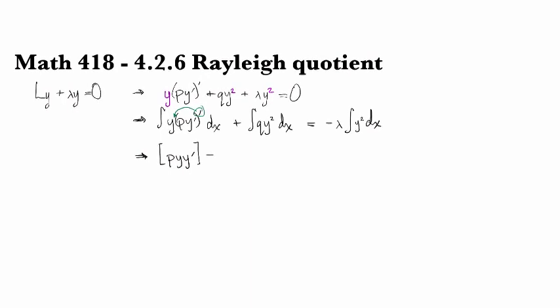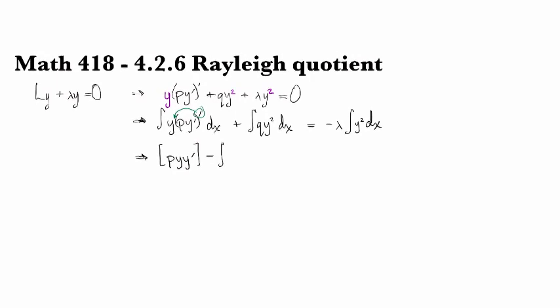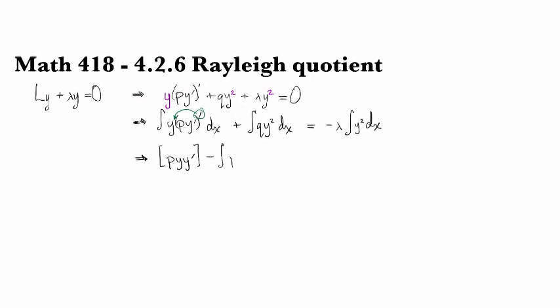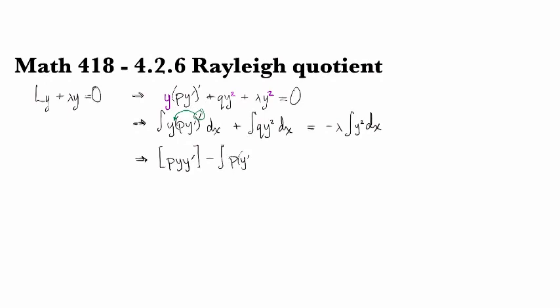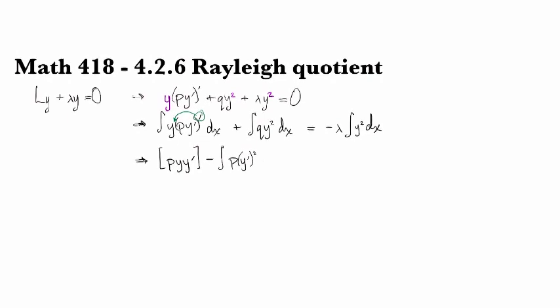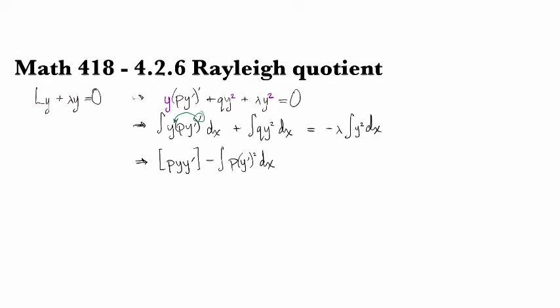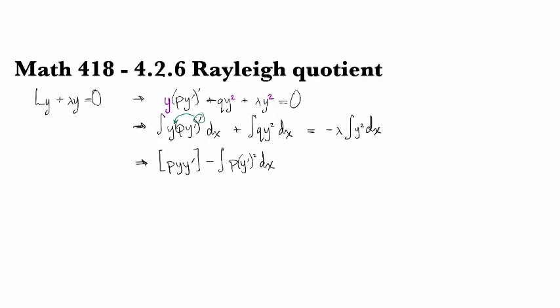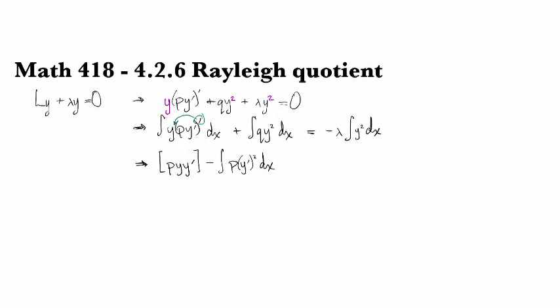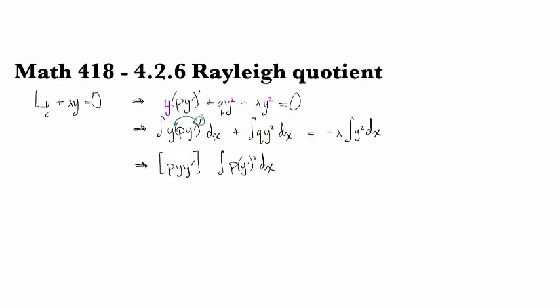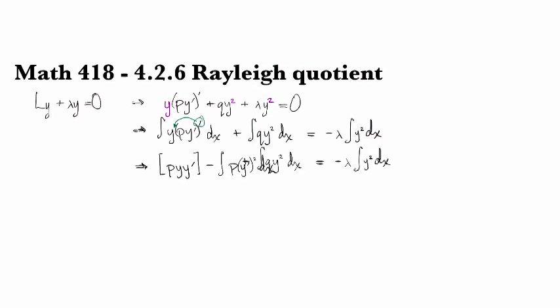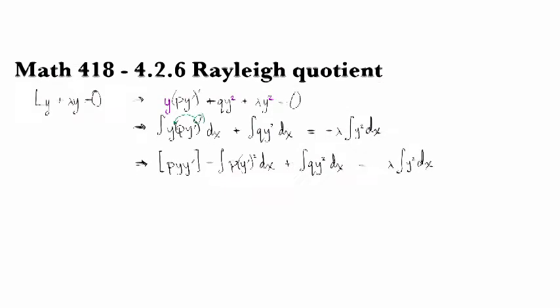So that will be evaluated on the boundary. And then I have minus the integral of... And then I'm going to have two y primes in there next to p. So this will be y prime quantity squared. So that's a little awkward, but oh well. And then the rest of this stuff will be just as it was on the previous line.